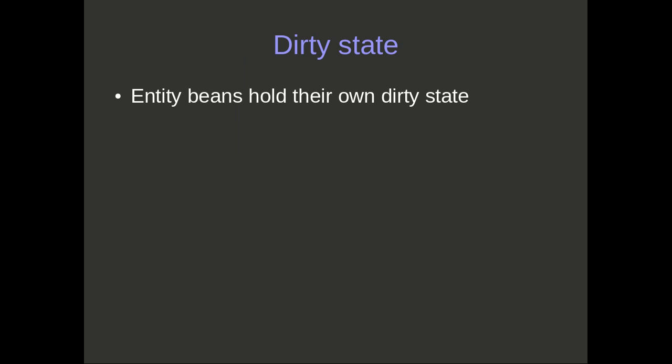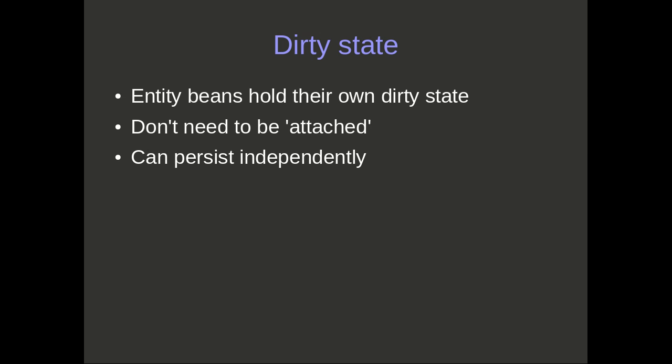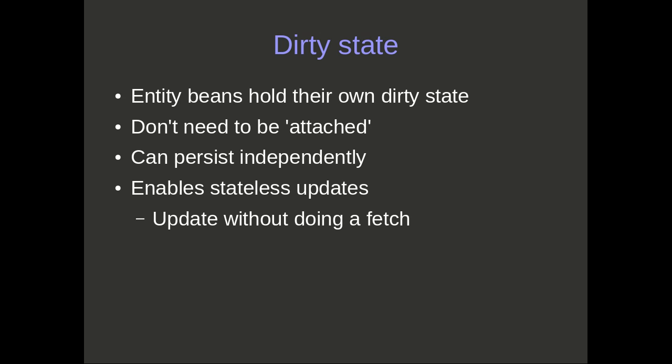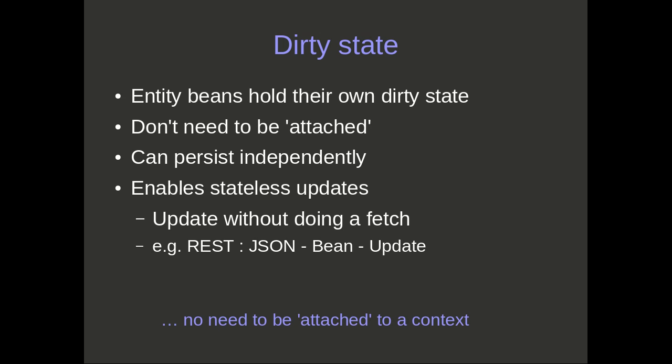Now let's look at Dirty State. In terms of eBean, the entity beans hold their own dirty state. This means they don't need to be attached to anything to persist them — they can be persisted independently. If you have some beans that are in a persistable state and some that are not, you can persist just what you want. This mechanism also enables stateless updates — an update without doing a fetch. You can new up an object, set its ID, set some properties, and say update. A typical use case is a REST endpoint: you get some JSON, marshal it into an object graph (not just a single bean — it can be an order with many details), and then say update. There's no need to be attached to a context in order to save. That's the main factor: the beans hold their own dirty state.